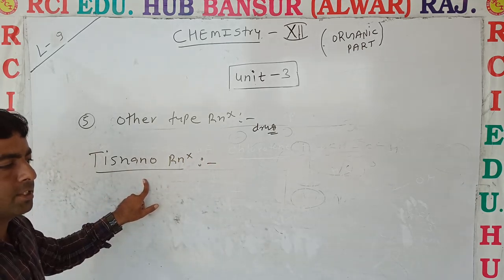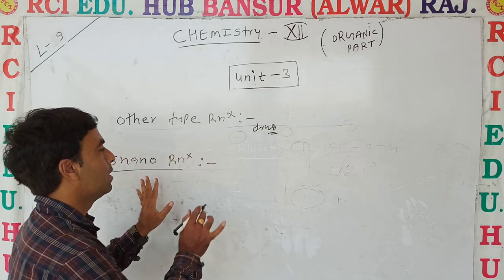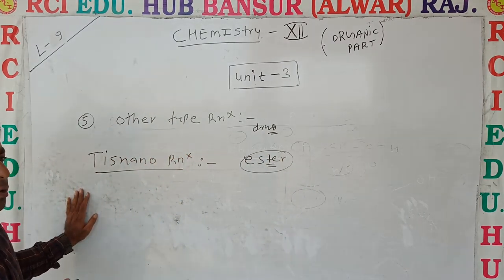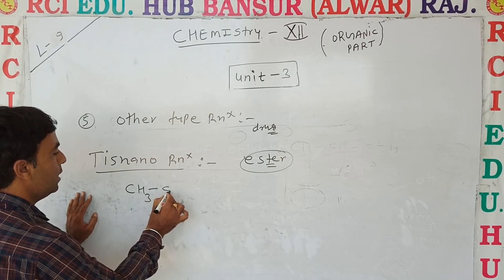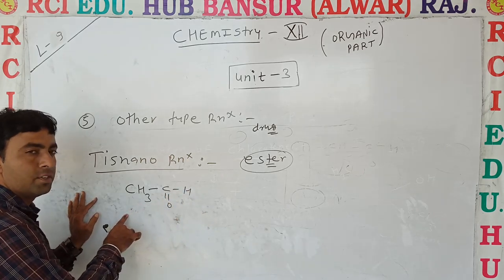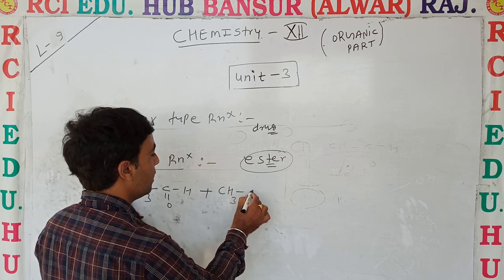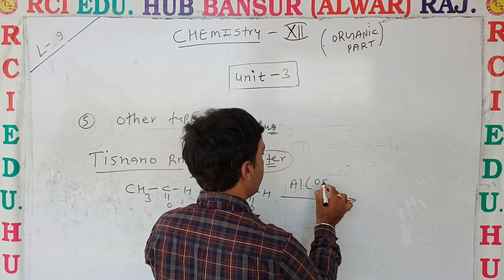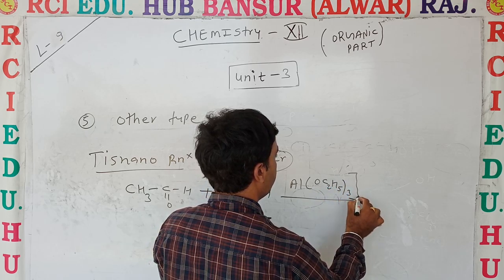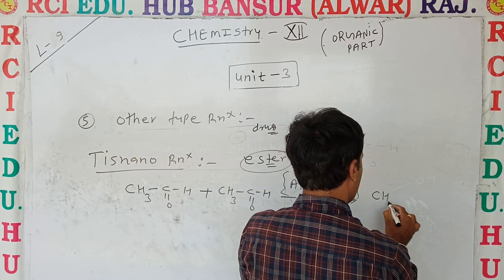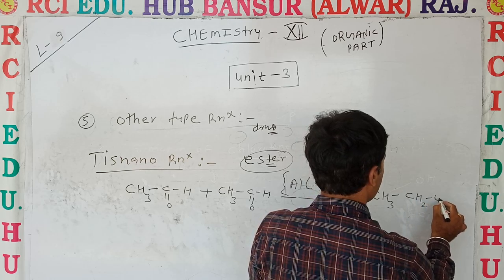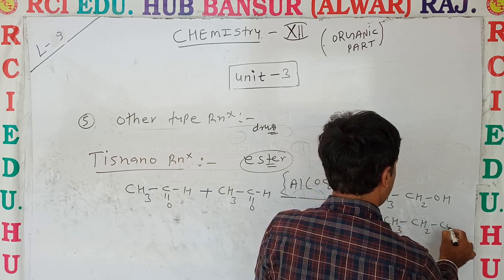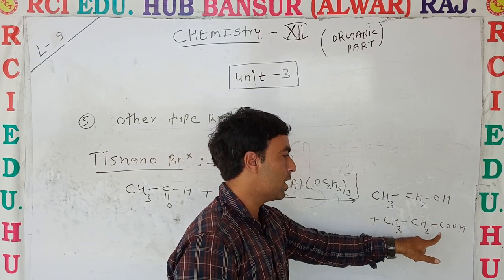This is a name reaction — an ester formation type. This involves CH3COOH — this is acetaldehyde. These involve aluminium ethoxide. In this reaction, two molecules are involved: one is oxidized and one is reduced, just like Cannizzaro reaction. This gives an alcohol and a carboxyl group.